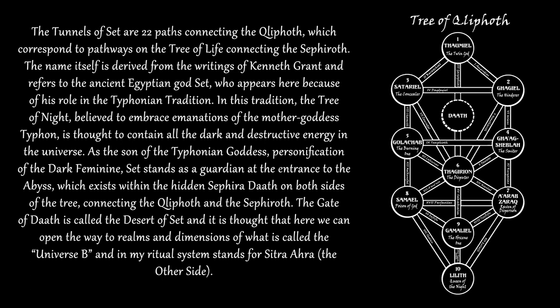In this tradition, the Tree of Night is believed to embrace emanations of the mother goddess Typhon and is thought to contain all the dark and destructive energy in the universe. As the son of the Typhonian goddess and personification of the dark feminine, Set stands as a guardian at the entrance to the abyss, which exists within the hidden Sephira Daath on both sides of the tree, connecting the Qliphoth and the Sephiroth. The Gate of Daath is called the Desert of Set, and it is thought that here we can open the way to realms and dimensions of what is called Universe B, which in my ritual system stands for Sitra Ahra, the other side.